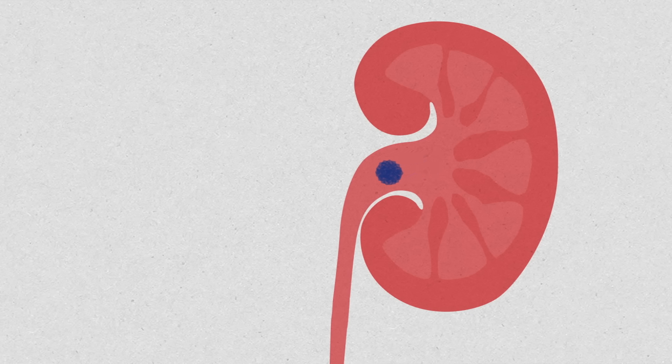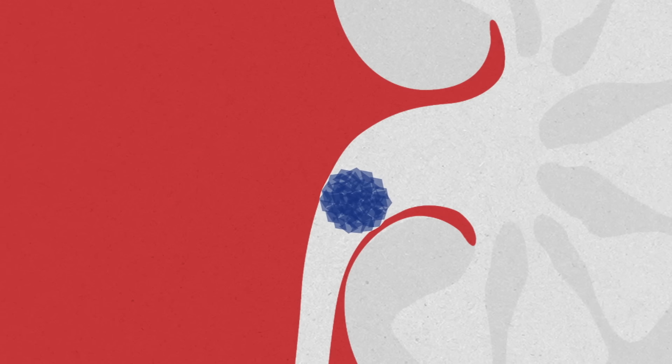A kidney stone can go undetected until it starts to move. When a stone travels through the kidney and into the ureter, its sharp edges scratch the walls of the urinary tract.